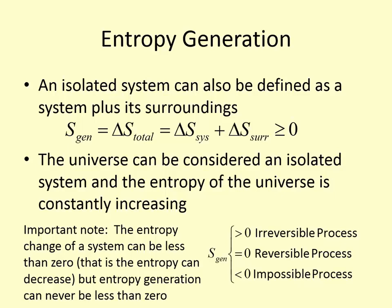The universe can be considered an isolated system, so its entropy is constantly increasing. An individual system's entropy can decrease — for example when heat is removed — but the entropy generation of the system plus surroundings must be positive. A single system can have a net decrease in entropy without violating the increase of entropy principle, as long as the surroundings show an equal or greater increase.